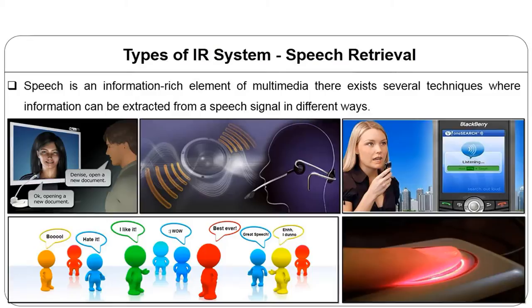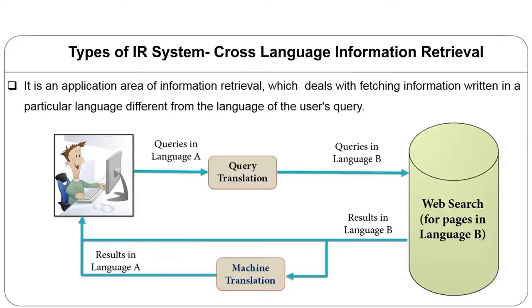Cross-language information retrieval is an application area of IR that deals with fetching information written in a particular language different from the language of the user's query. For example, using Hindi queries to retrieve English documents. Suppose a person does not know English — they can type using Hindi as a language, and the system searches and retrieves documents in Hindi. However, this is still an area of research with much ongoing work in what is called CLIR, Cross-language Information Retrieval.